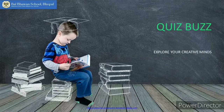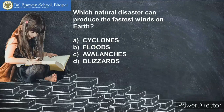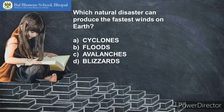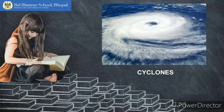So here comes Question 1: Which natural disaster can produce the fastest winds on earth? Is it cyclones, floods, avalanches, or blizzards? I'll give you some time to ponder over it. And the answer is — cyclone!